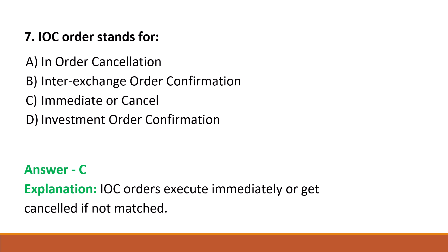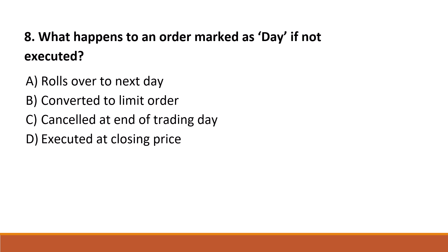Next question: what happens to an order marked as 'day' if not executed? Option A: rolls over to next day. Option B: converted to limit order. Option C: cancelled at end of trading day. Option D: executed at closing price. The correct answer is Option C, cancelled at end of trading day.